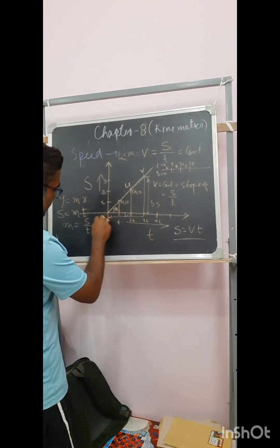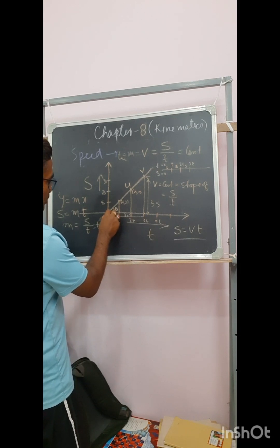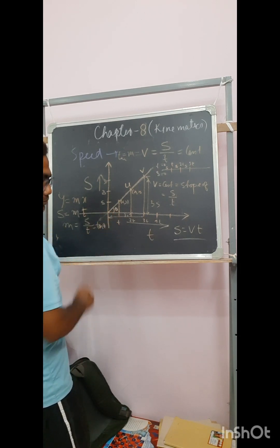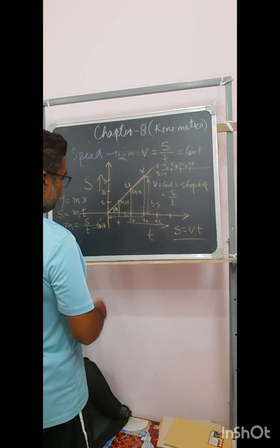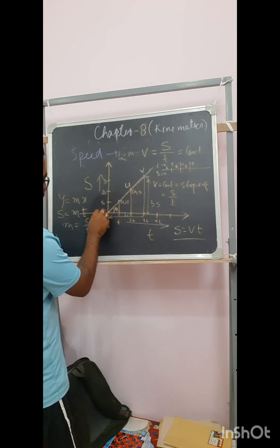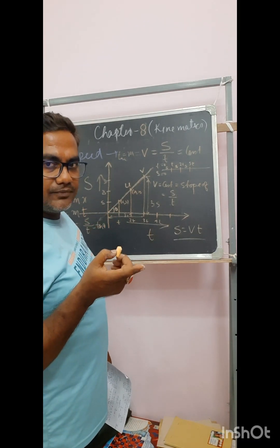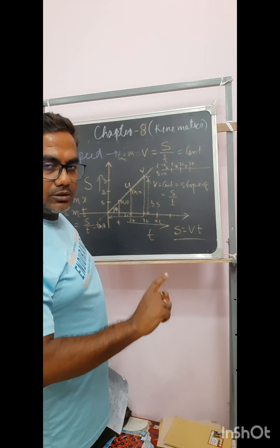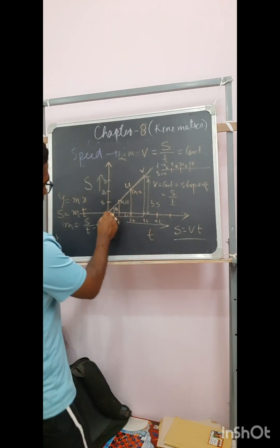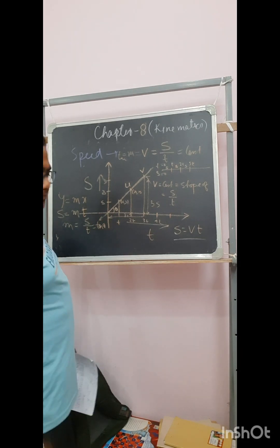However, can this line be extended backward? Extending backward would require negative time — but time cannot be negative. Time is a scalar and cannot have direction. So extending this line backward is not possible.